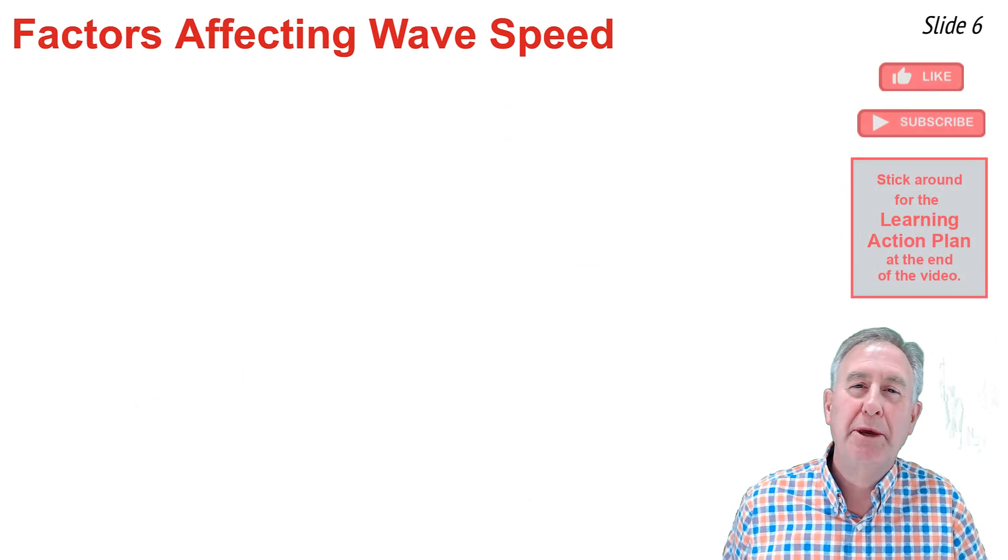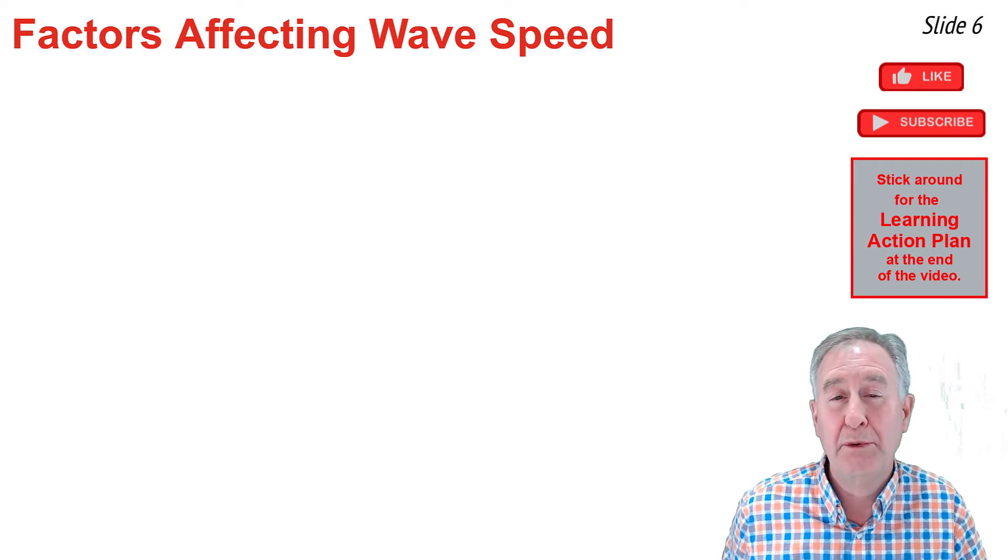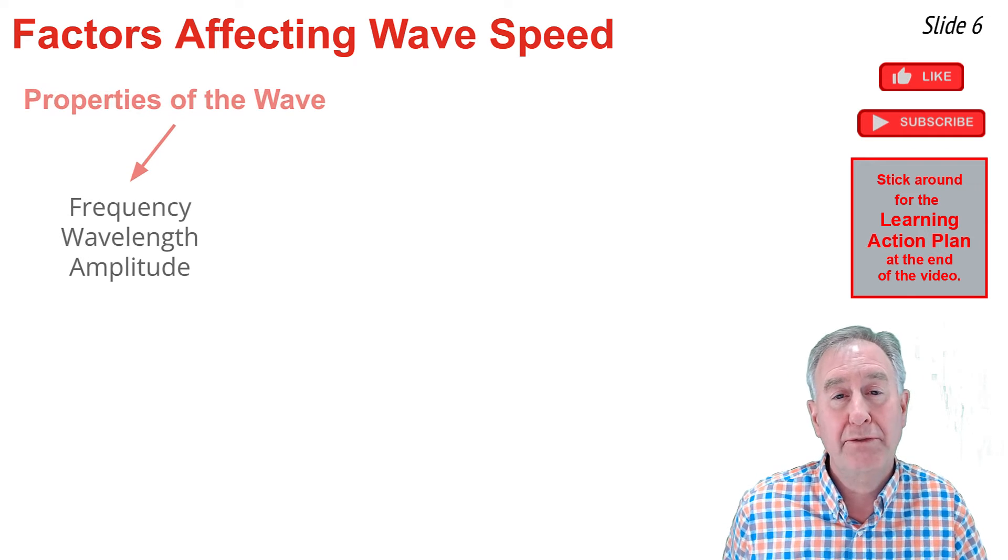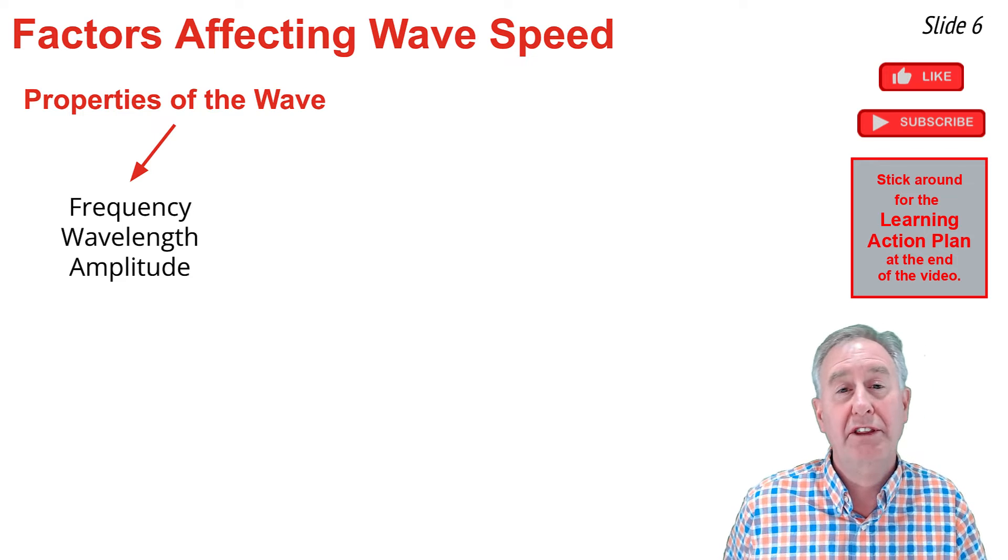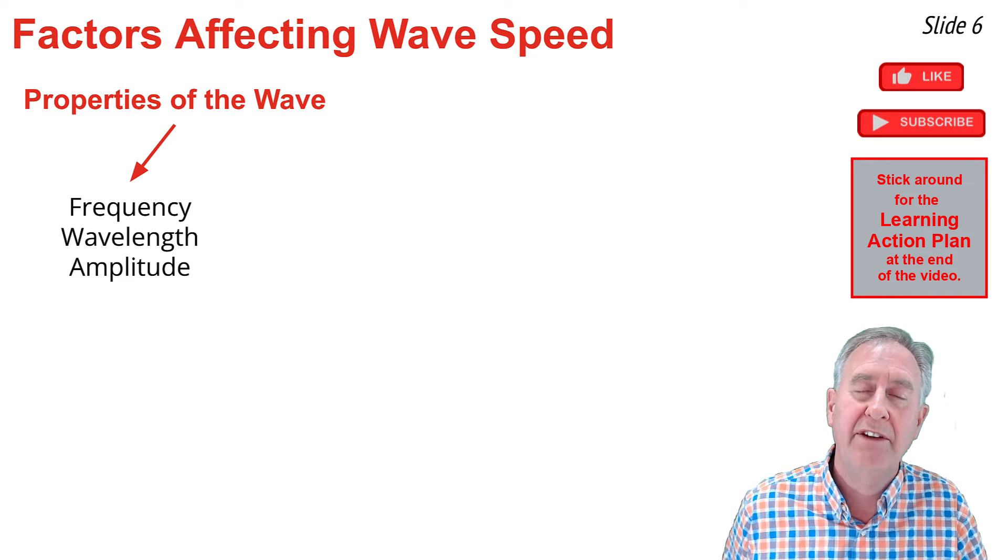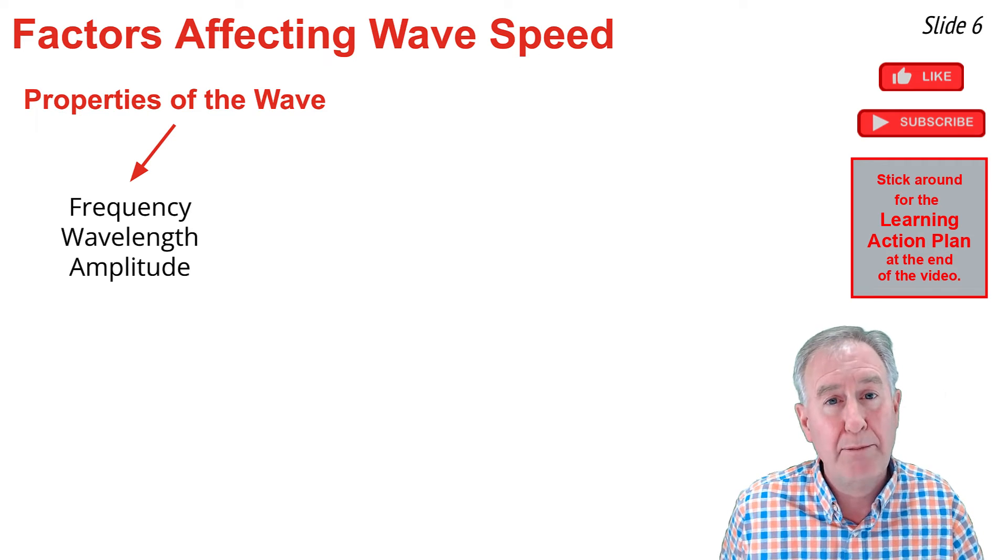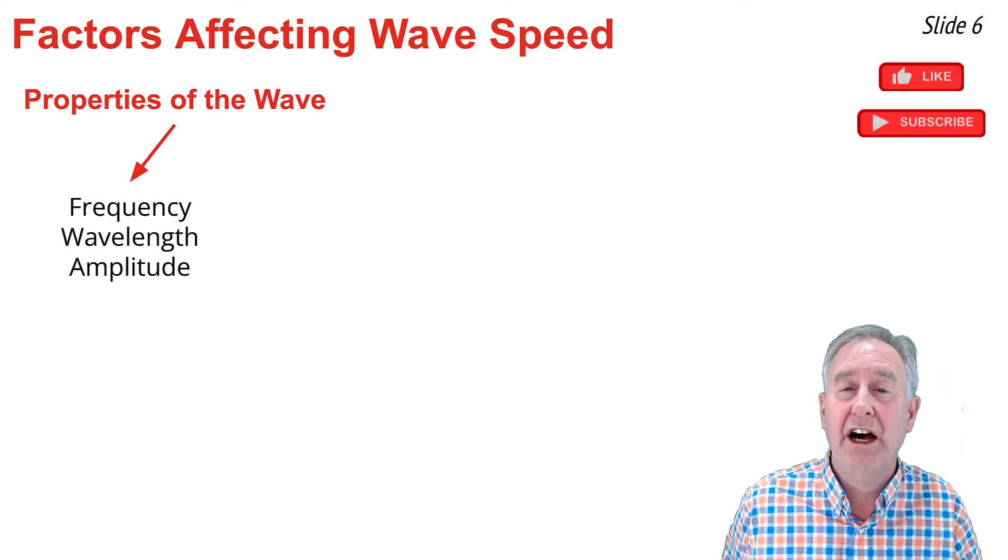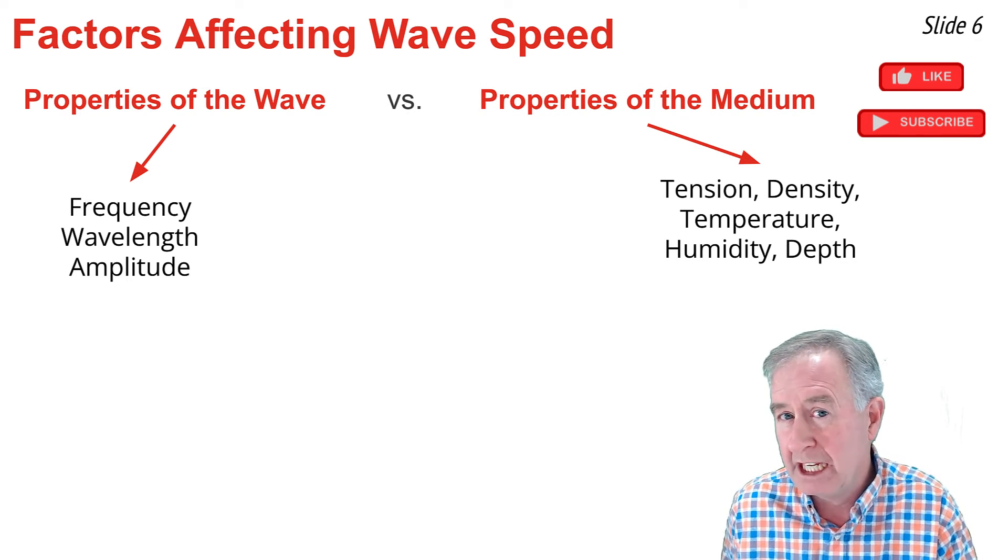That experiment raises the question of what properties affect the speeds at which waves travel through a medium. We're going to investigate two types of properties and the first type is the properties of the wave itself. This would include things like the frequency or wavelength of the wave and even the amplitude of waves. These are all properties that describe the wave. They don't describe the material the waves traveling through, just the wave itself.